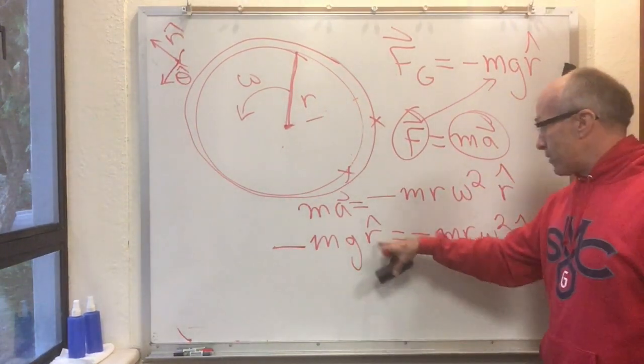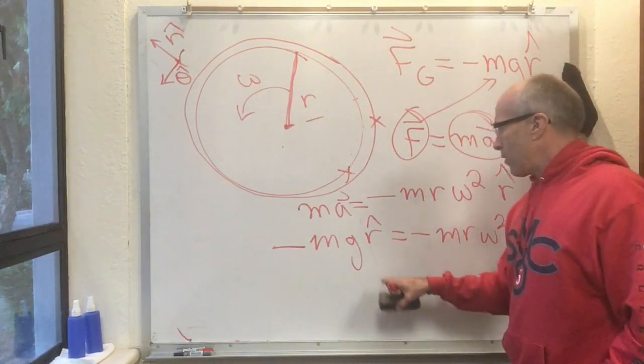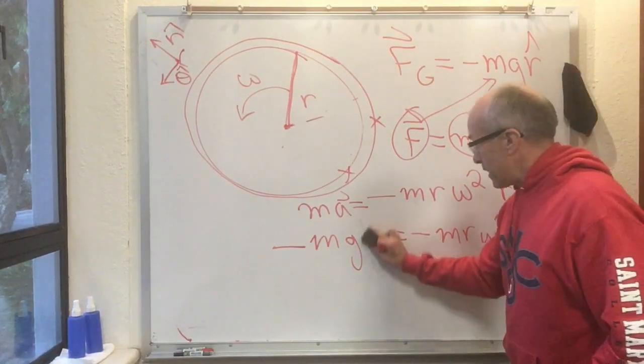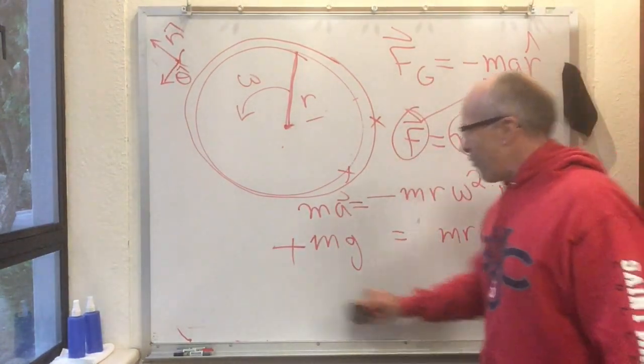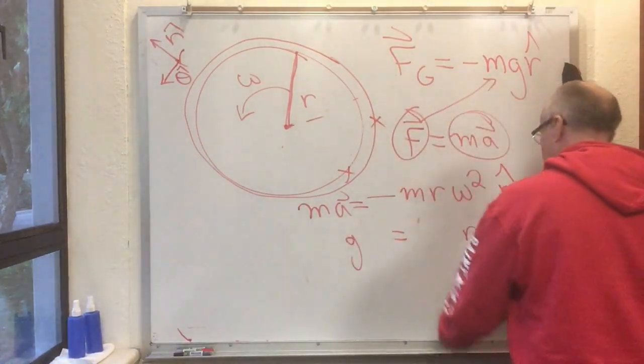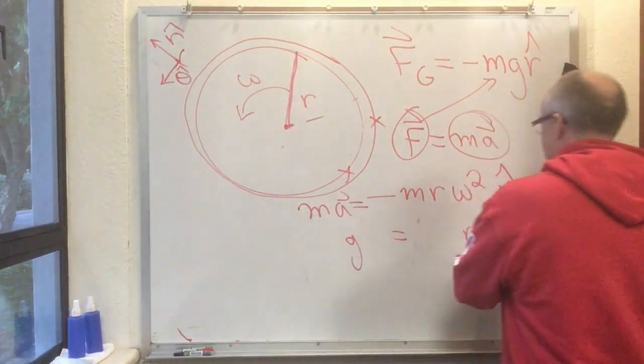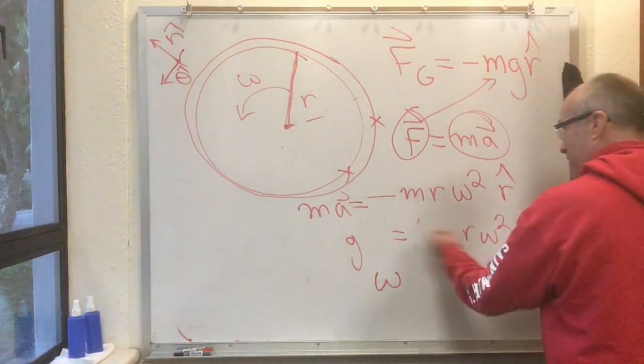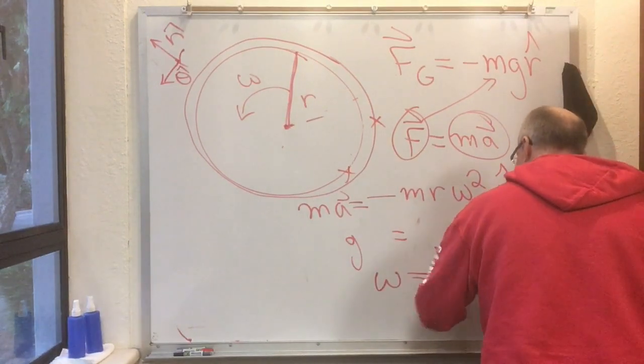It's really fortunate there are r-hats on both sides of this equation. Something multiplying r-hat equals something else multiplying r-hat, so this must equal that. We have minus signs on both sides, so we can get rid of those. We also have m's on both sides, so we can get rid of those. And now we have our answer: the frequency omega, if you're a satellite going around Earth, you just solve for omega and get omega equals the square root of g over r.